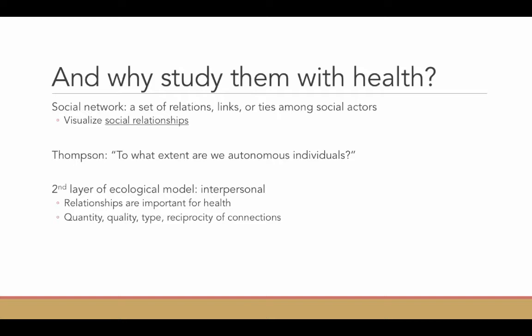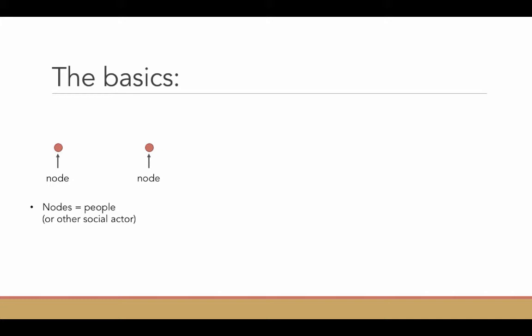Let's look at the basics of visualizing social relationships. In network science or network research, when we do these visualizations, we have dots that we would call nodes. Nodes are typically people or some other social actor. If there's a relationship between those two people, you'll see a tie or a link or a path between them.